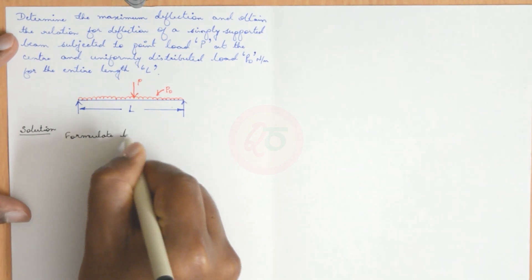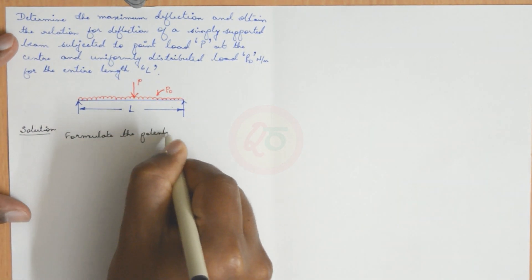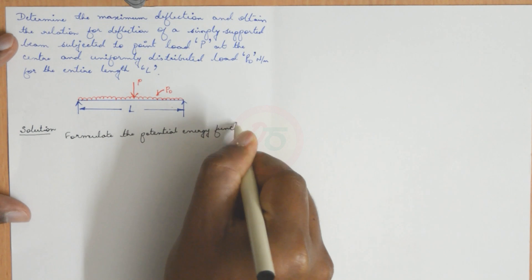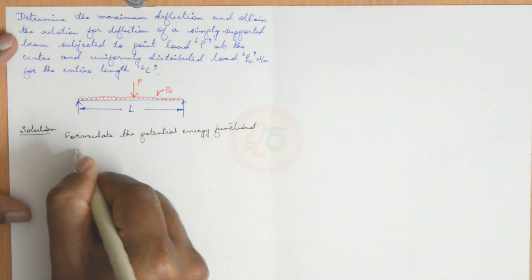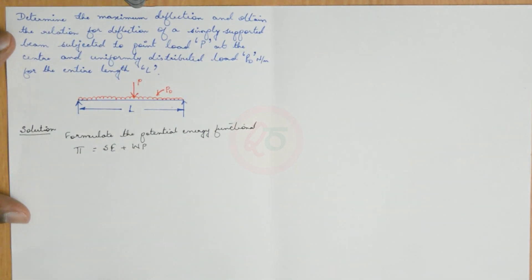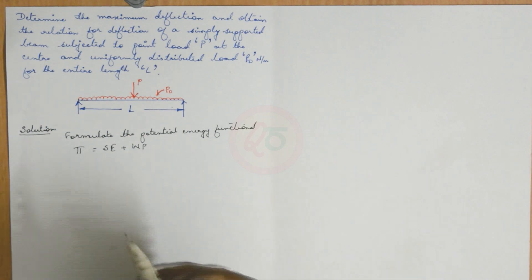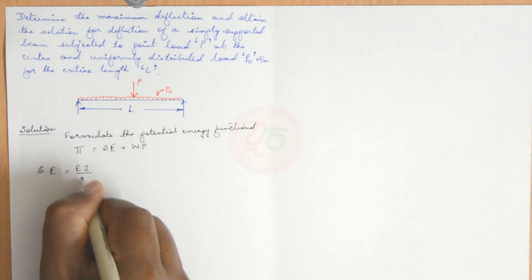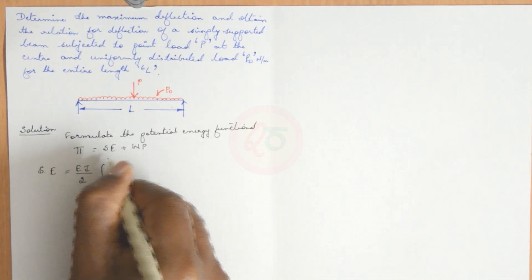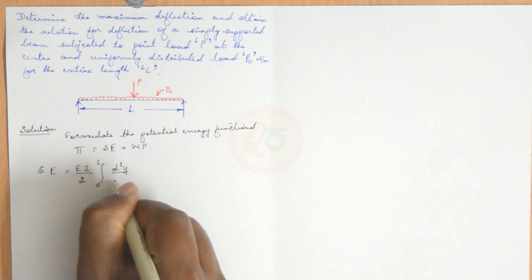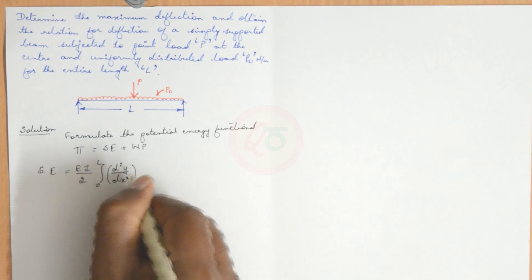Formulate the potential energy. So pi is equal to strain energy plus work potential. We have seen that for beams the strain energy is given by EI over 2, integral from 0 to L of (d²y/dx²)² integrated over the entire length.